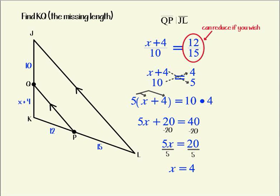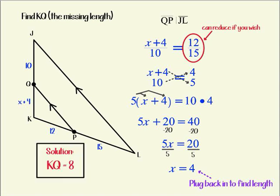Now, if I was asked to solve for x, we'd be done. But I wasn't asked to just solve for x. I was asked to find KQ. That means the length from K to Q. Since x is 4, we're going to take just a second and plug that back in for x to find our missing length. So 4 plus 4 means that KQ is going to have a length of 8.